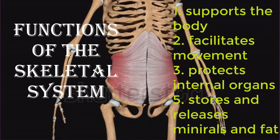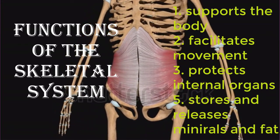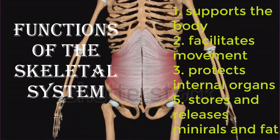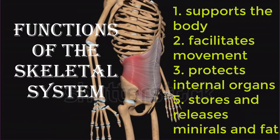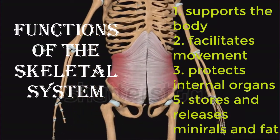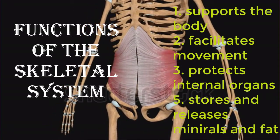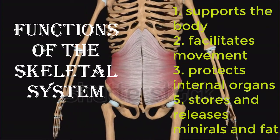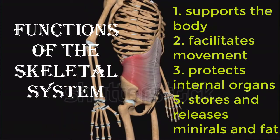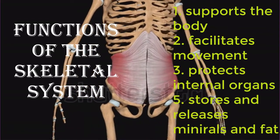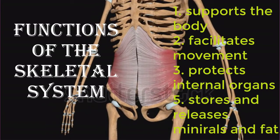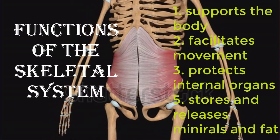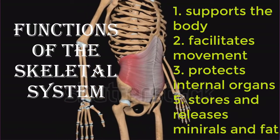The most apparent functions of the skeletal system are the gross functions — those visible by observation. Simply by looking at a person, you can see how bones support, facilitate movement, and protect the human body. Just as the steel beams of a building provide a scaffold to support its weight, the bones and cartilage of your skeletal system compose a scaffold that supports the rest of your body.